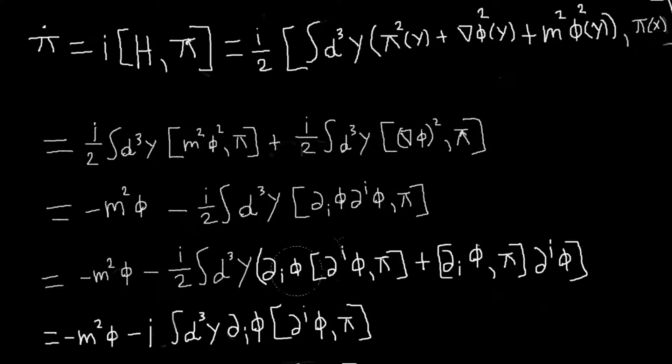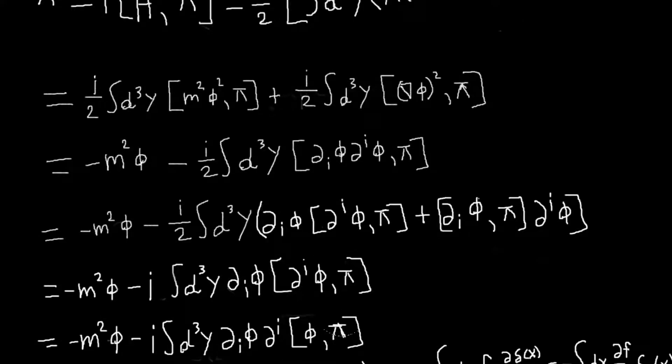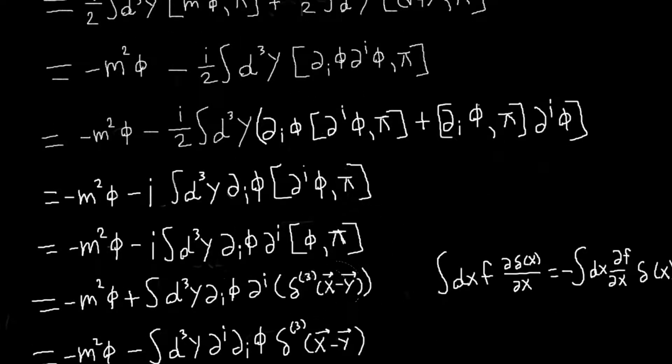So I can combine them, and just work with this term, get rid of this two. So I'll have this, and then again I can pull out this di phi here, or just this di operator. So I'll act on this commutator, but this commutator is a delta function.